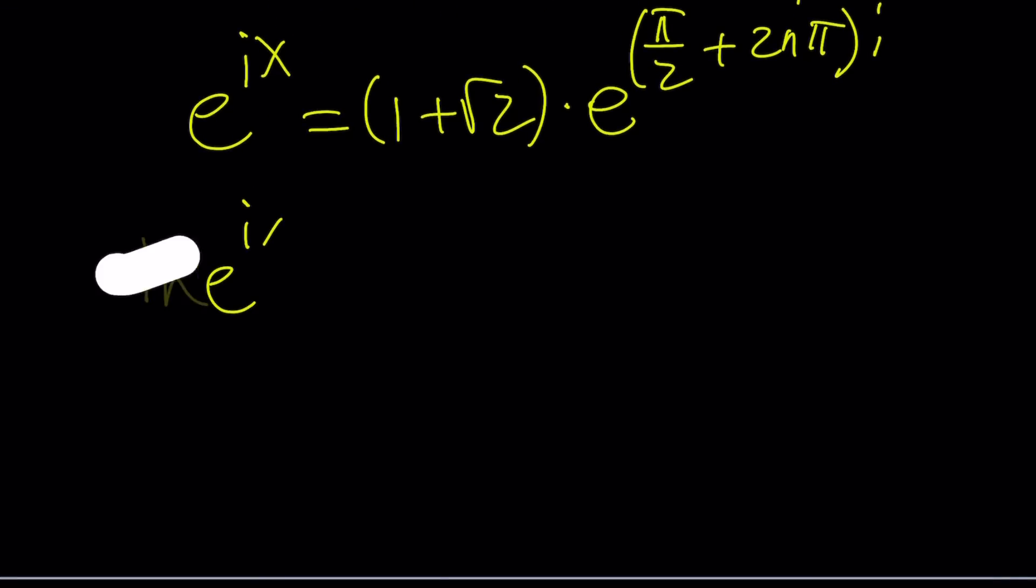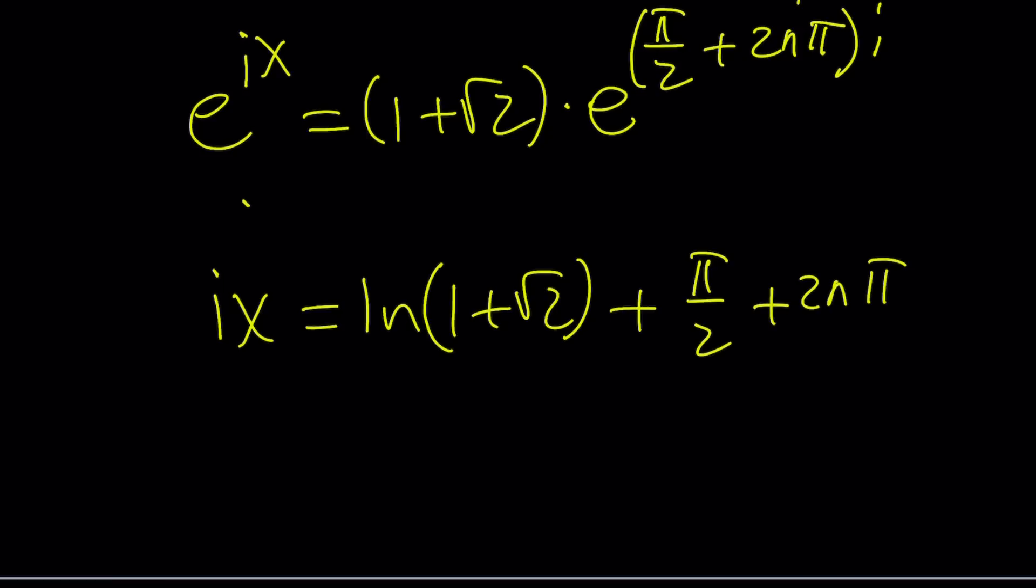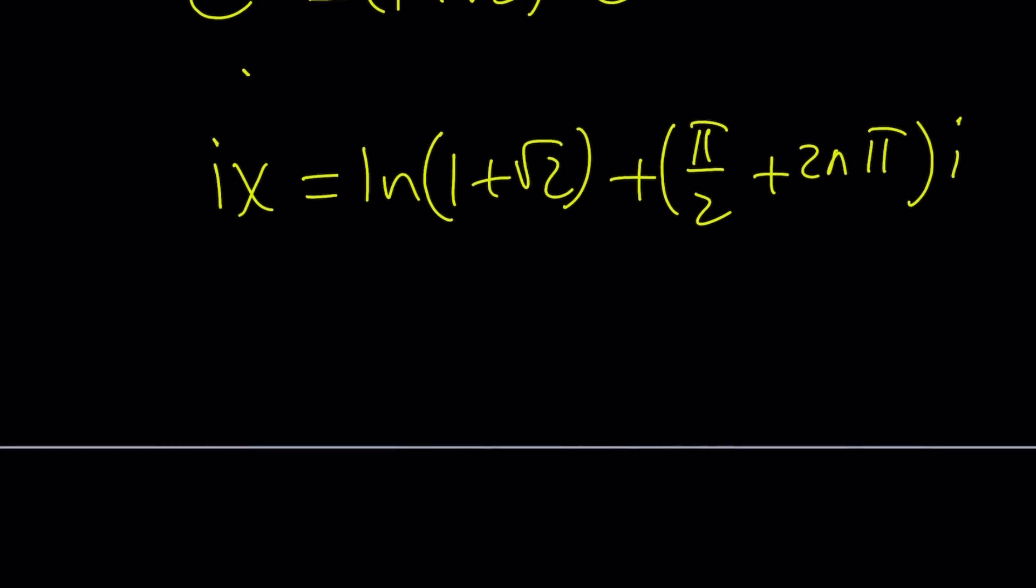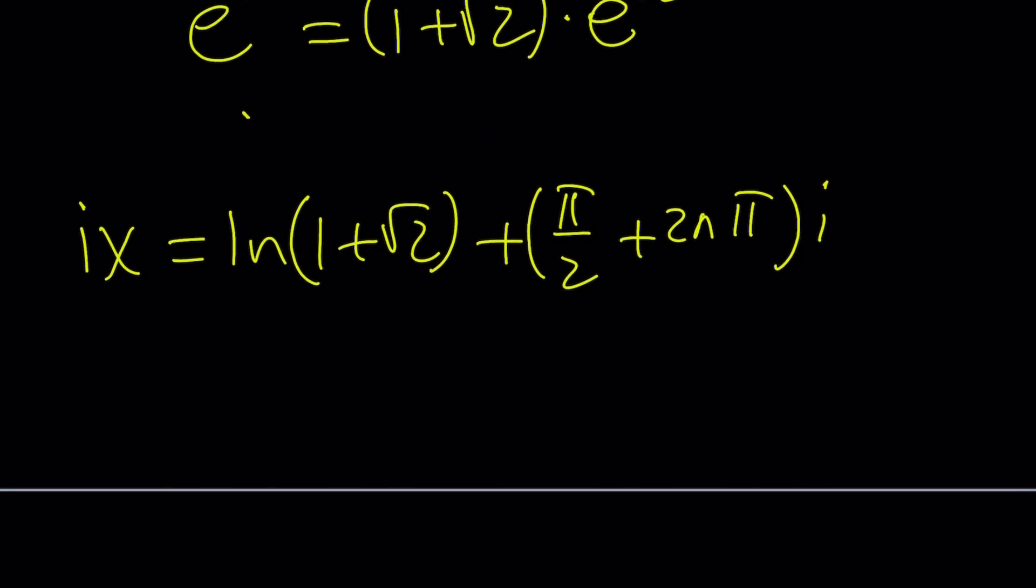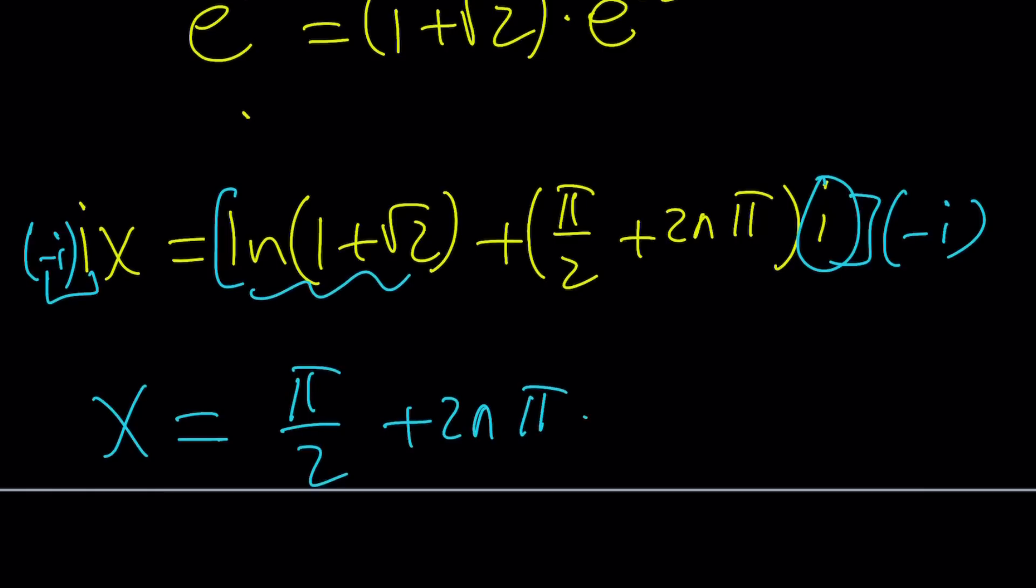ln e to the x. To keep a long story short, let me tell you. After natural logging both sides, you get ix equals ln 1 plus root 2 plus this guy over here, the exponent. Now, a lot of times people are going to think about dividing by i. But I'm going to give you an alternative, which is actually multiplying both sides by negative i, which is kind of more fun, right? Let's multiply by negative i and multiply by negative i. And negative i times i is negative i squared, which is 1. So, that's going to give me x. And then here when you distribute to negative i, you're going to get the following. i times negative i is going to be negative i squared again, which is 1. So, I'm going to get pi over 2 plus 2n pi without the i. And then this is going to get a negative i. So, minus ln 1 plus root 2 multiplied by i.